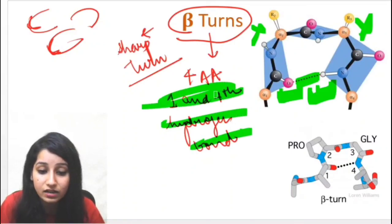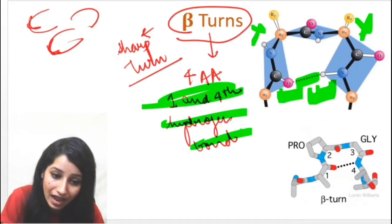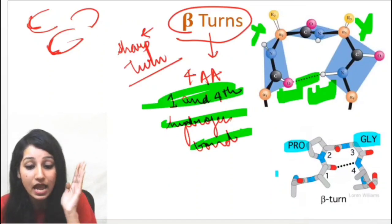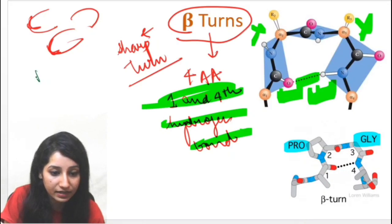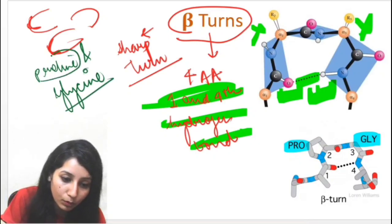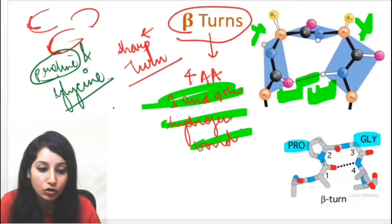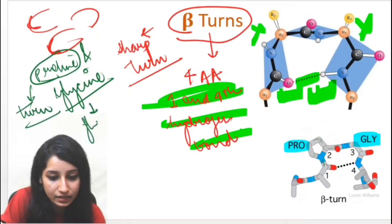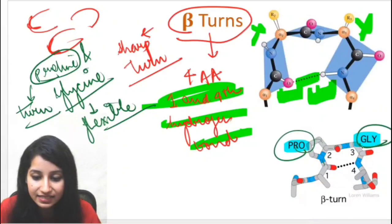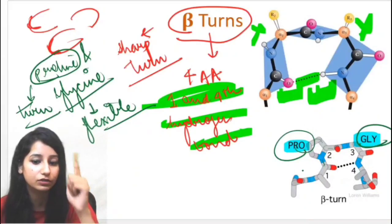In beta turns, proline and glycine are present in higher amounts — this is the opposite of what we learned in alpha helix, where they were restricted. Proline can easily facilitate a turn because its ring structure helps in turning. Glycine, being very flexible, can also assist in rotating. So proline and glycine are the two amino acids present in higher amounts in beta turns, with 4 total amino acids involved and a hydrogen bond between the 1st and 4th.